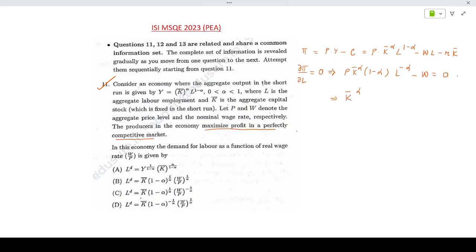Which implies k bar to the power alpha, 1 minus alpha, l to the power minus alpha, 1 by alpha equals w by P. So that is k bar to the power alpha, 1 minus alpha into 1 by W by P would be l to the power alpha.